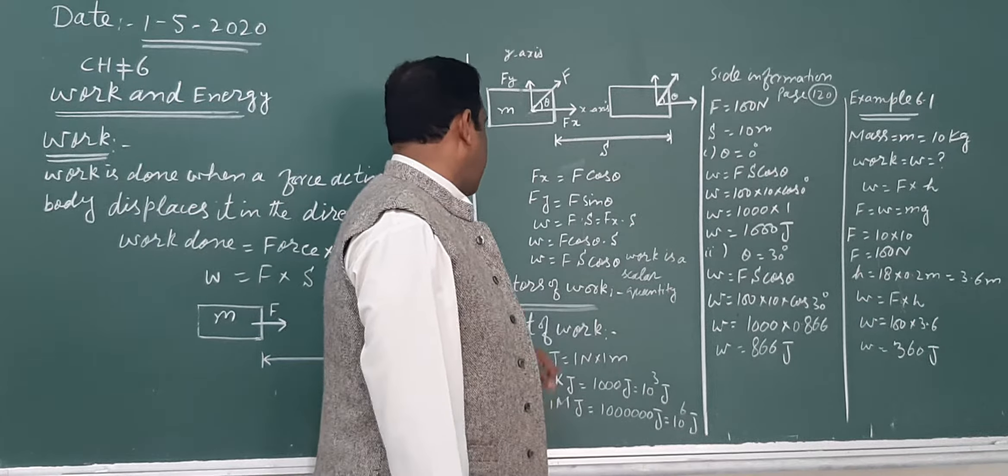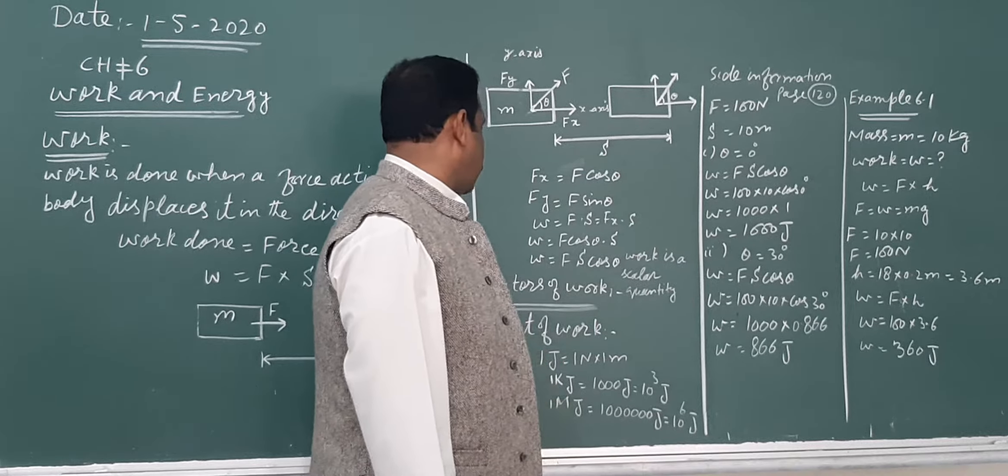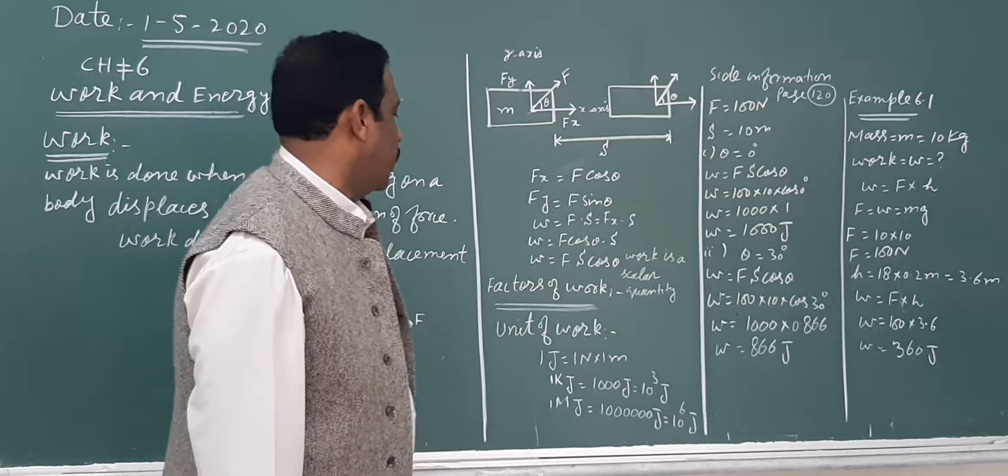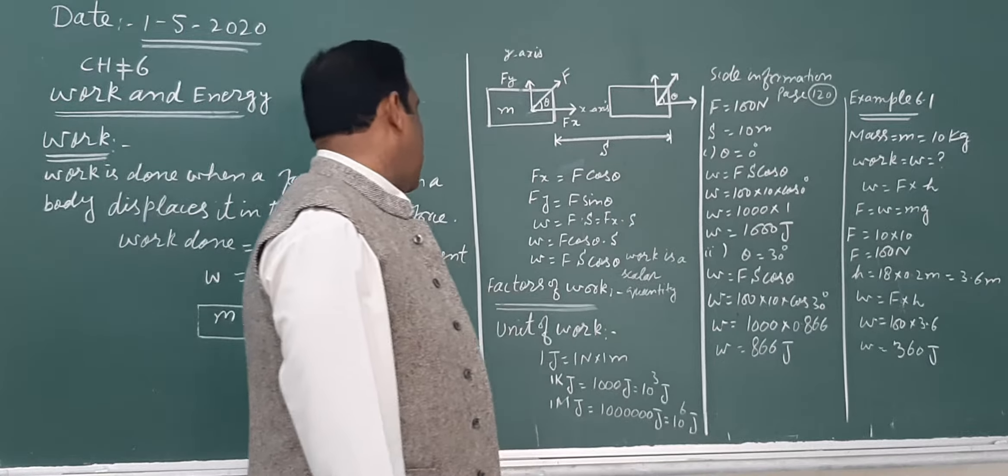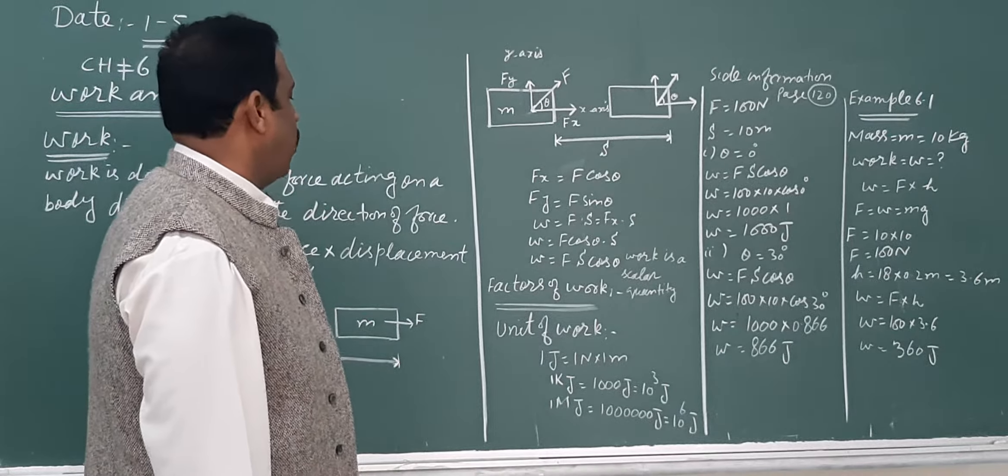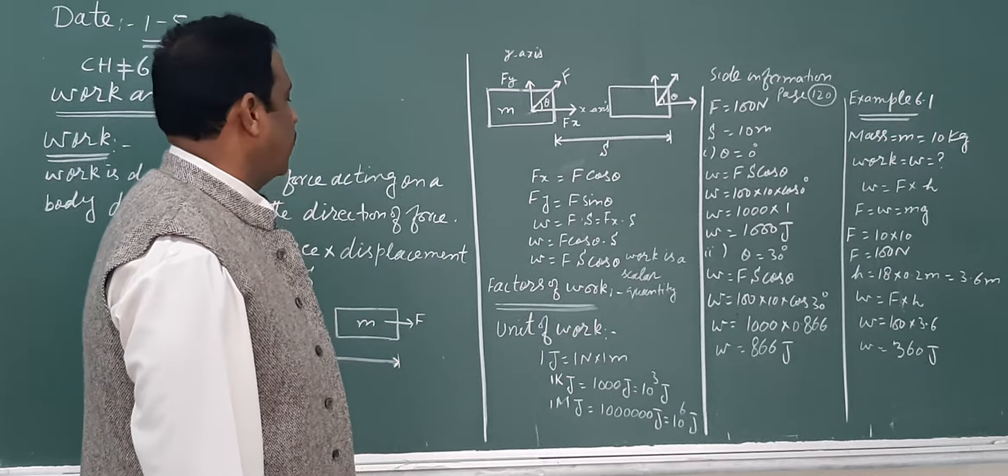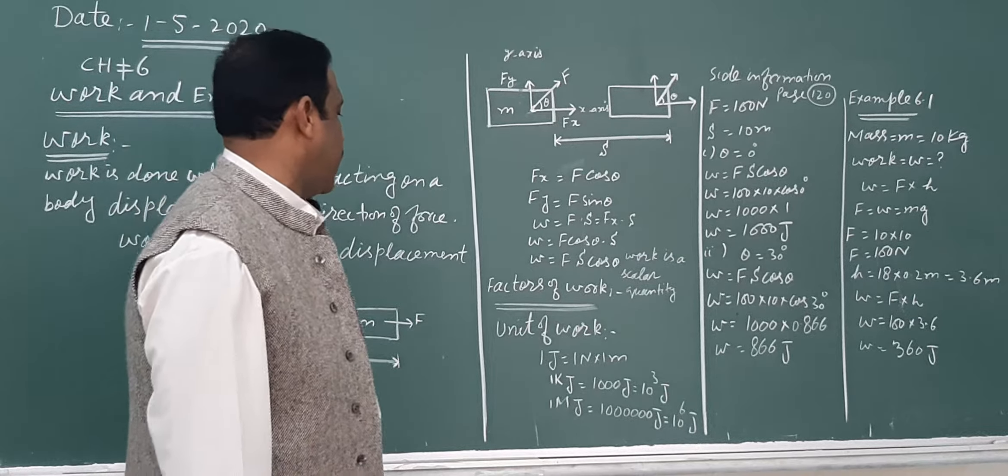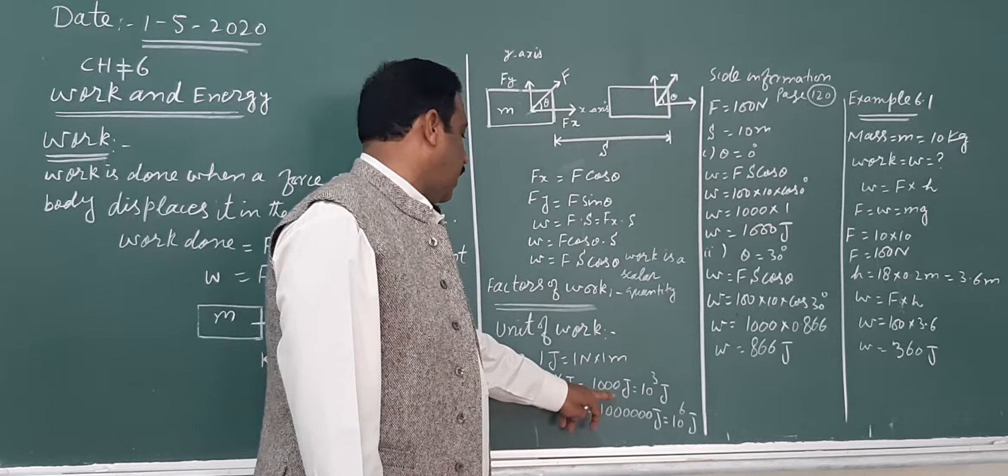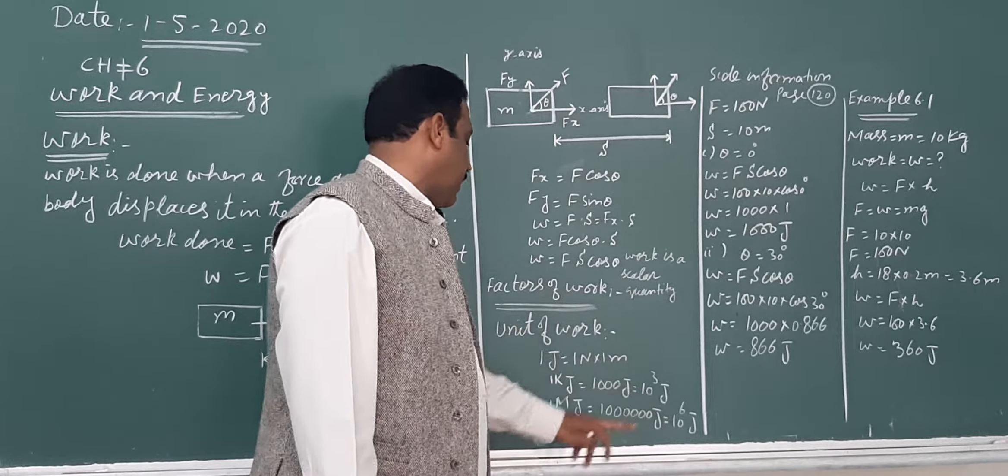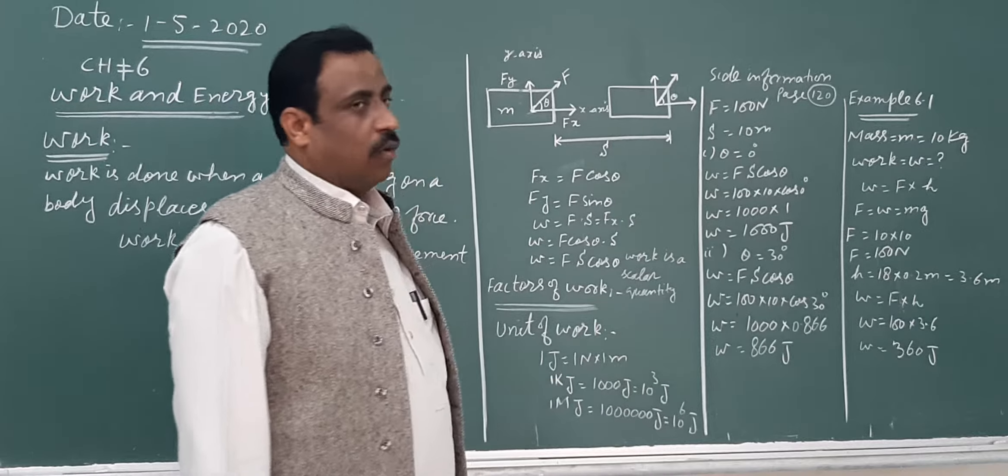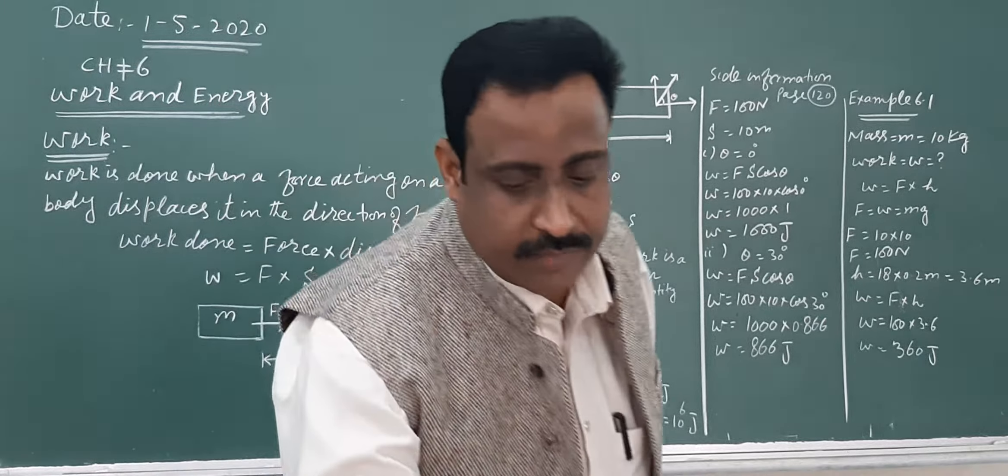Unit of work: one joule is the amount of work when one newton force moves a body one meter distance in the direction of force. 1 kilojoule = 1000 joules = 10^3. 1 megajoule = 10^6 joules. This is basic SI information.